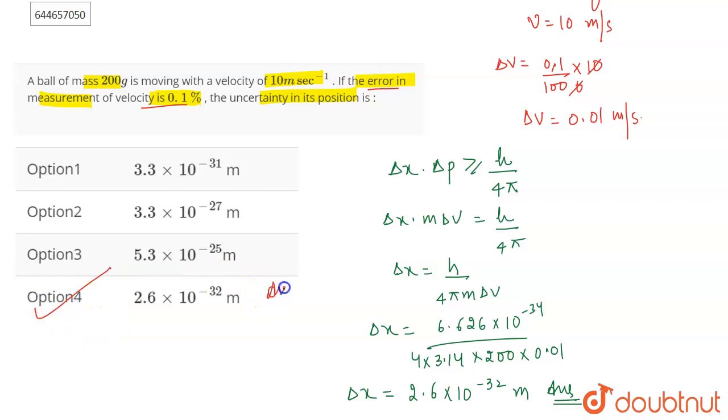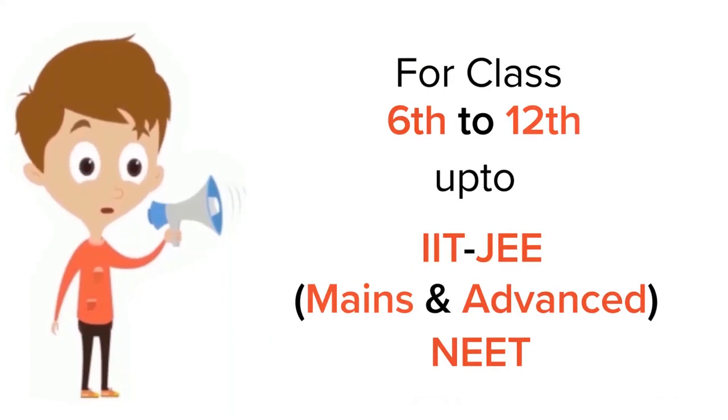number 4, so option number 4 will be the correct answer for the question. For class 6 to 12, IIT JEE and NEET level, trusted by more than 5 crore students, download Doubtnet app today.